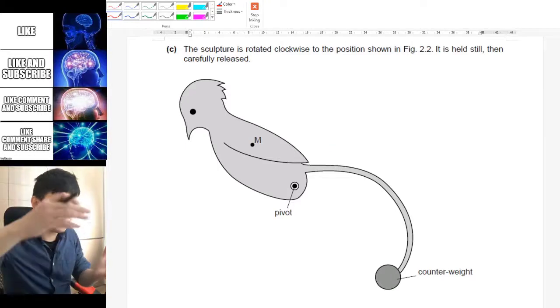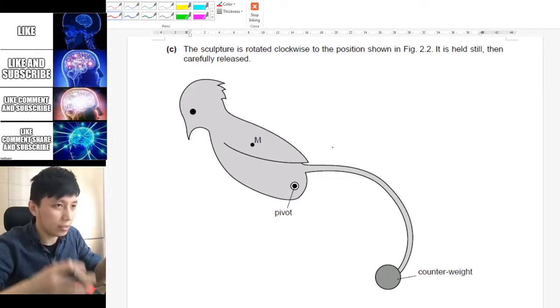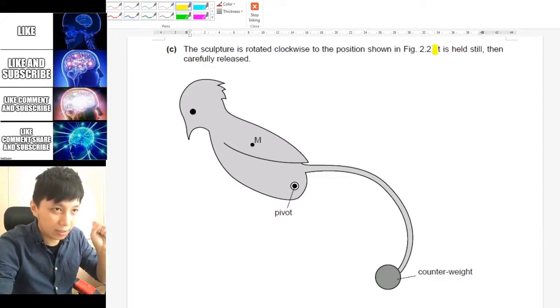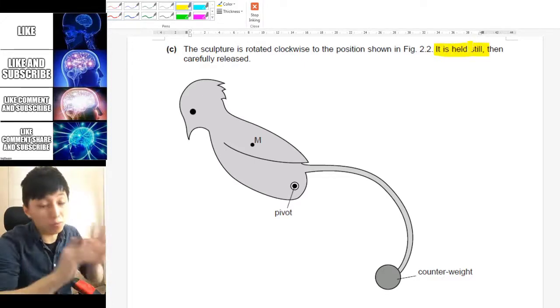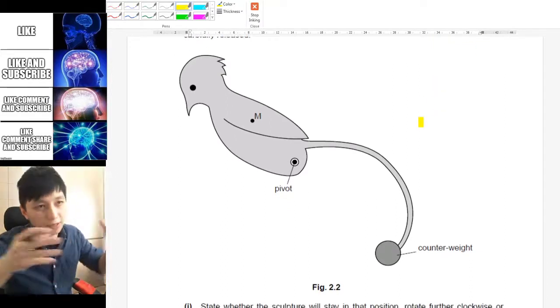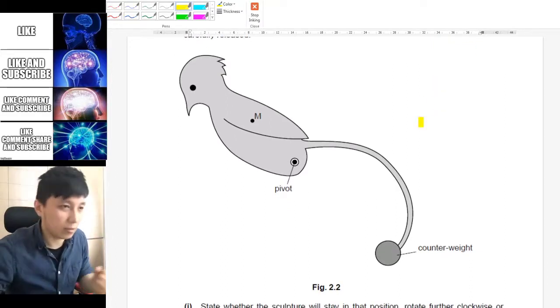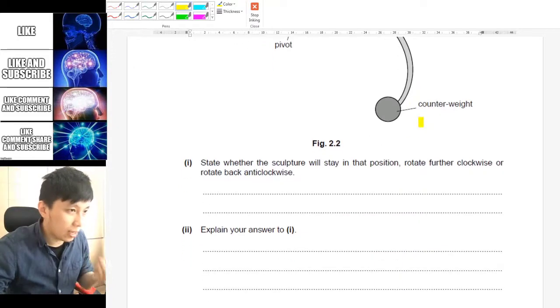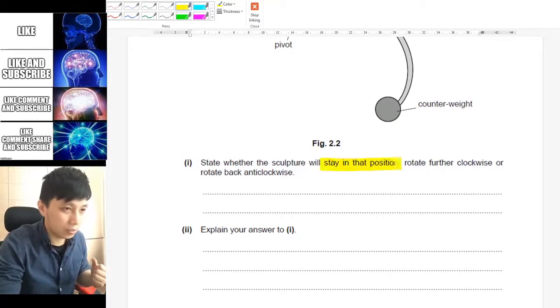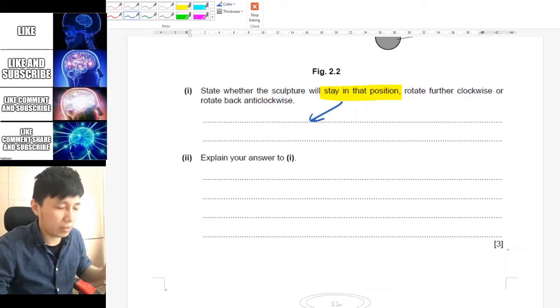Part c is said now it gets rotated clockwise to this position, and very importantly it said that it is held still, so not moving. There's no motion at all. It's asking you state whether the sculpture will stay in position, rotate clockwise, or anticlockwise. And the answer is staying in that position.